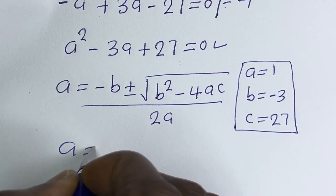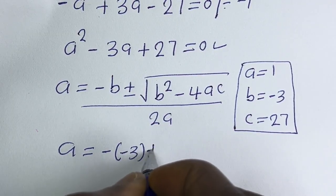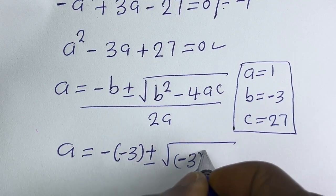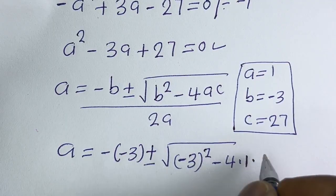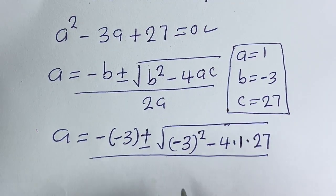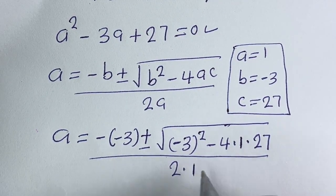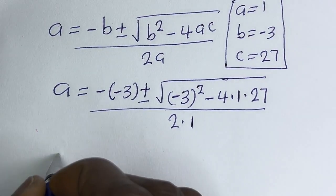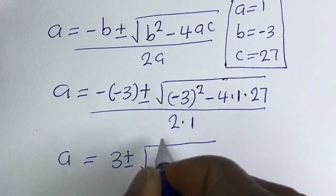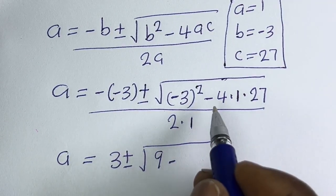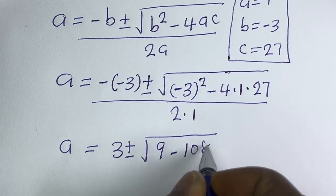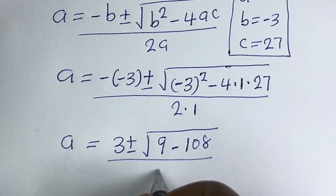Then, a is equal to minus bracket minus 3, plus or minus square root of minus 3 squared minus 4 multiplied by 1 multiplied by 27, everything divided by 2 multiplied by 1. A is equal to 3 plus or minus square root of 9 minus 4 times 1 times 27, that is 108, divided by 2.